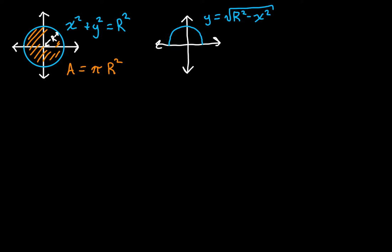Now, what I'm going to do is use integration. We're going to find the area under that curve — I'm going to call this area 1 — and because we know that this is half a circle, I'm just going to multiply that by two. Area 2 is going to be area 1 times 2.